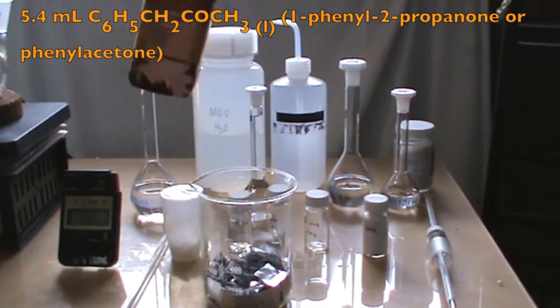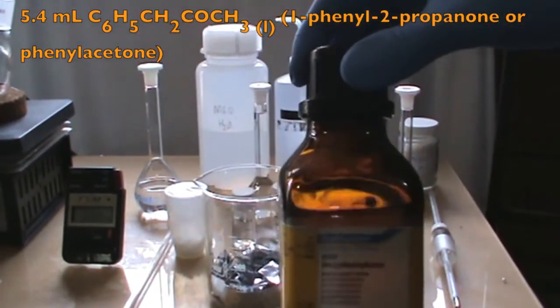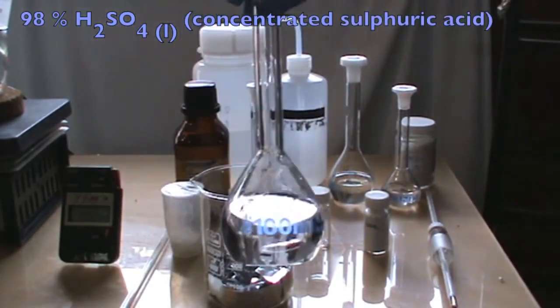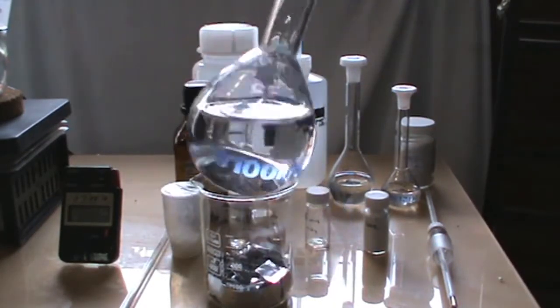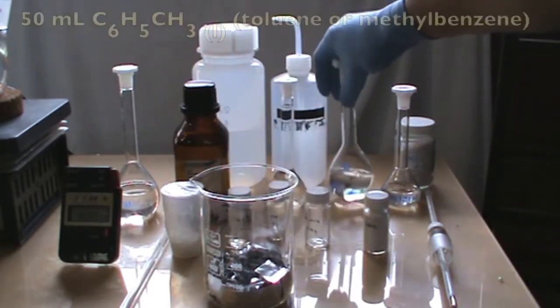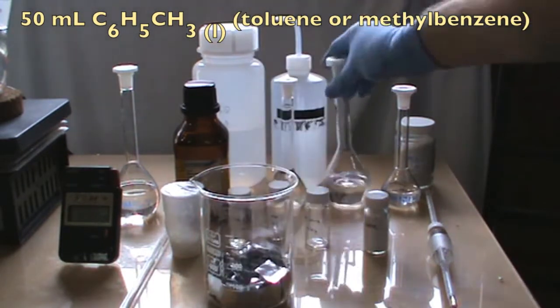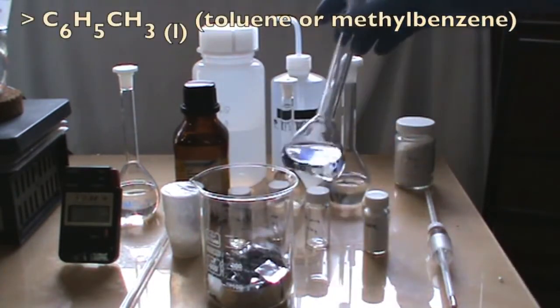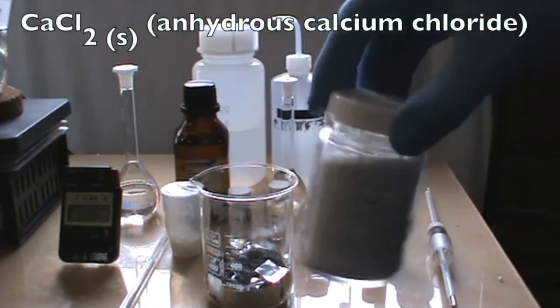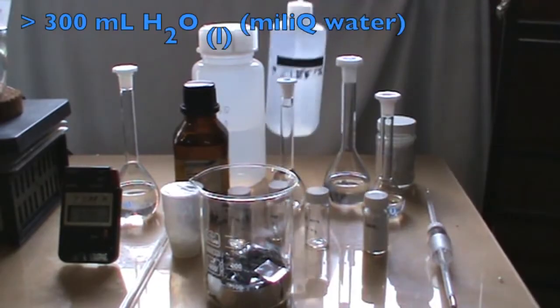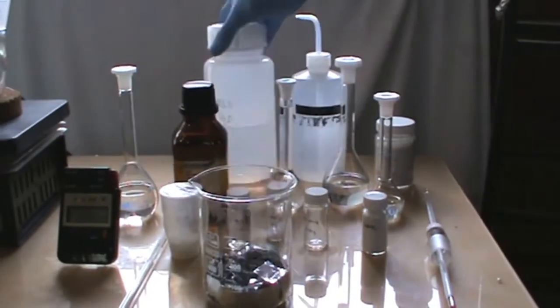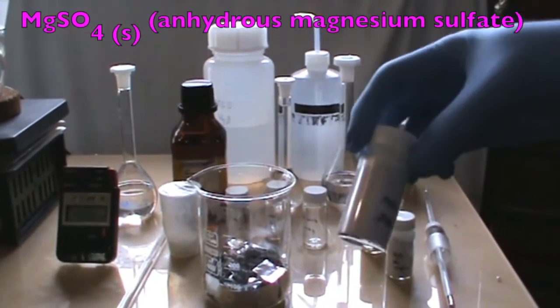1-phenyl-2-propanone, which we need a volume of 5.4 ml. Concentrated sulfuric acid, some more methanol, 50 ml of toluene, some more toluene, anhydrous calcium chloride crystals, an excess of 300 ml of MQ water, anhydrous magnesium sulfate crystals.